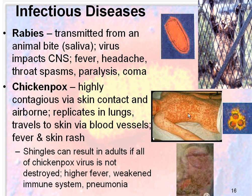Chickenpox is highly contagious through skin contact and can also be transmitted airborne. The virus is replicated in the lungs, travels to the skin through your blood vessels, and causes fever and rash. Shingles can result in adults if not all of the chickenpox virus was destroyed early on, and can result in high fever, weakened immune system, and pneumonia.